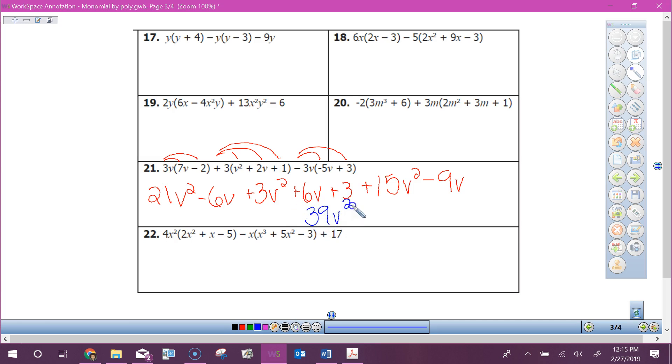You have to find like terms and get 39v squared. Combine v's and get minus 9v. We got negative 6v plus 6v, they cancel. Then we've got negative 9v and then plus three at the end. So it's not so horrible, right? We're just distributing.